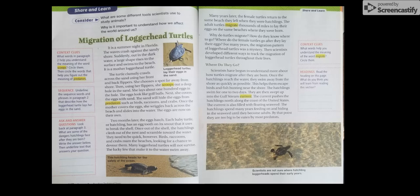Where do they go? Scientists have begun to understand more about how turtles migrate after they are born. Once the hatchlings reach the water, they swim away from the shore as quickly as possible. This helps them escape birds and fish hunting near the shore. The hatchlings swim for one to two days. They are then swept into the Gulf Stream current. The current pushes the hatchlings north along the coast of the United States. The current is also filled with floating seaweed. The hatchlings spend many years feeding on and hiding in the seaweed until they become adults. By that point, they are too big to be eaten by most predators.